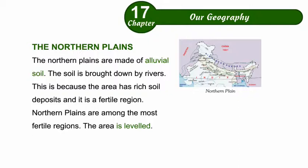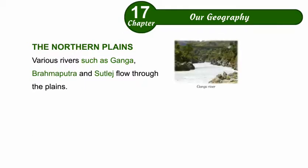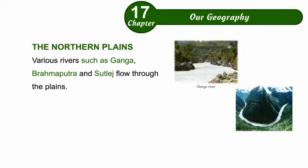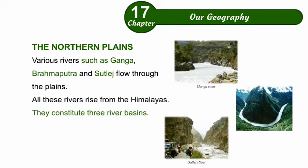The area is leveled. Various rivers such as Ganga, Brahmaputra, and Sutlej flow through the plains. All these rivers rise from the Himalayas. They constitute three river basins.